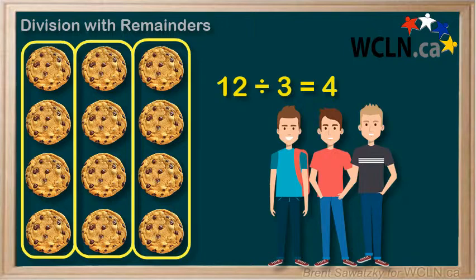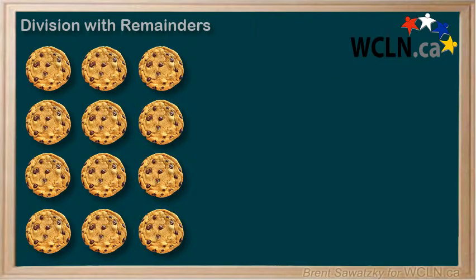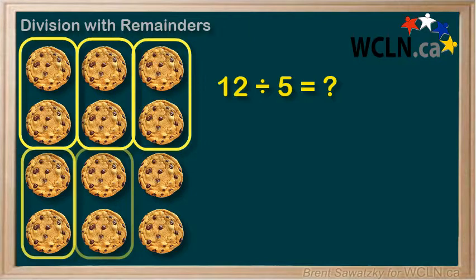In other cases the division doesn't work out so perfectly. For instance, what if we had five friends to divide the cookies among? Well, we could split them into five groups of two. So each friend would get two cookies.